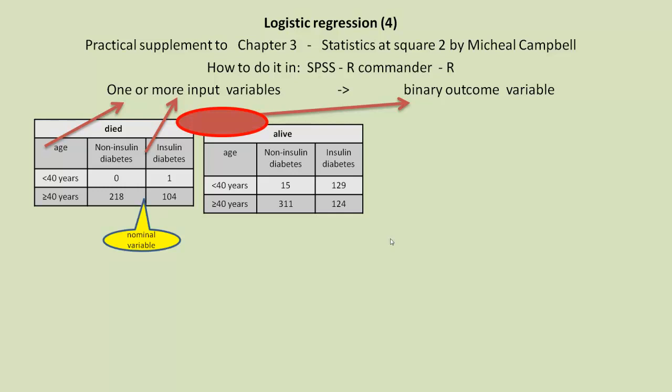Non-insulin-independent diabetes and insulin-dependent diabetes can be classed as a nominal variable with two categories. But age, we've dichotomized it, but it really isn't nominal, is it? It's actually ordinal, but we'll class it as nominal for this analysis.